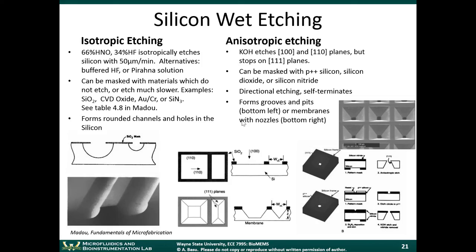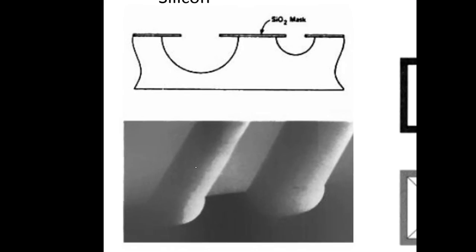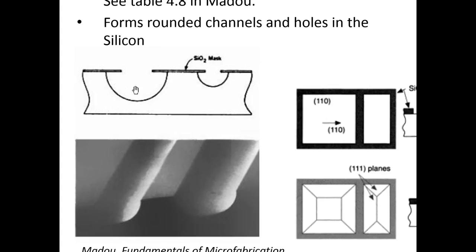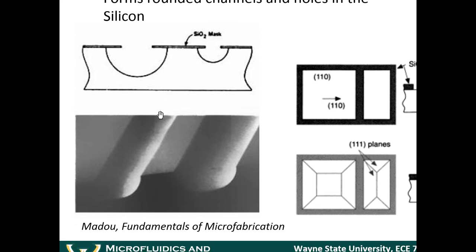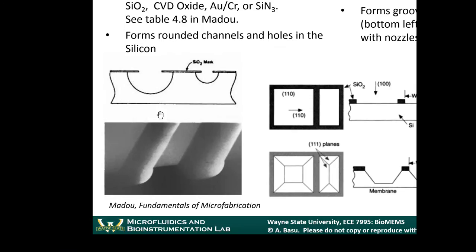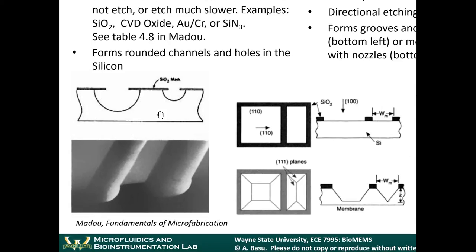If you want to make semicircular rounded channels, you can use an isotropic etching technique. For example, a mixture of HNO3 and HF isotropically etches silicon at a rate of 50 microns per minute. A typical silicon wafer is 500 microns thick, so it's only 10 minutes to get through the entire wafer. One of the tricky things with isotropic etching is that you have to time the etch perfectly. For instance, if you're trying to make a microfluidic channel with a depth of 100 microns, you have to time it exactly.